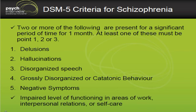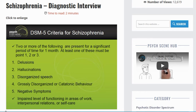The DSM-5 criteria require two or more of the following symptoms present for at least a significant period of time over one month, and at least one of these should be either delusions, hallucinations, or disorganized speech. The positive symptoms are quite significant, but it's important to think about the negative symptoms as well, as these are a core part of schizophrenia. These symptoms must also impact functioning in areas of work, interpersonal relationships, or self-care.